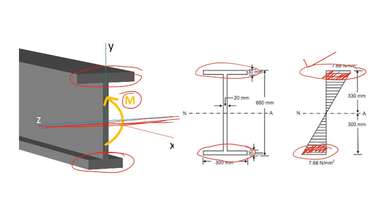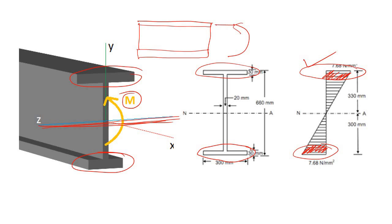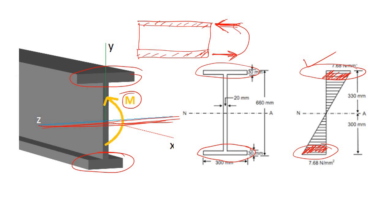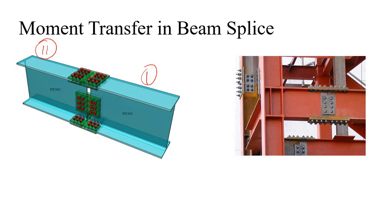If we have an I-section with flanges and a web, and bending moment is applied, we can say it is equivalent to a compressive force and a tensile force being carried by the flanges only. So in any connection, if we have to transfer the bending moment from one part to the other part of the member, it is clear that we simply have to connect the flanges.